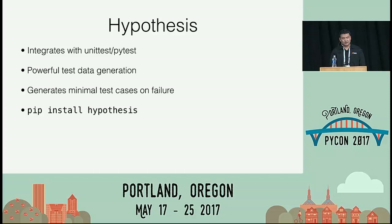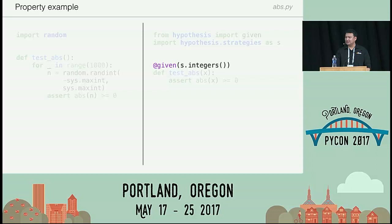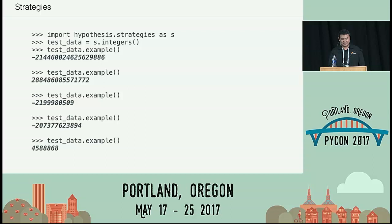To take our first example, what we had before was a for loop. The equivalent in Hypothesis is just using the `given` decorator — it goes in our normal test suite alongside unit tests. We import `given` and the `strategies` module. `given` wraps our test function and handles the looping, generating a bunch of sample test data and passing it to our test function. Using the `integers` strategy, it gives random integers: large numbers, small numbers, positive, negative. You can even try it in the REPL by calling `.example()`.